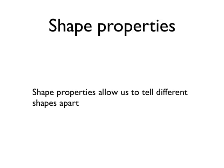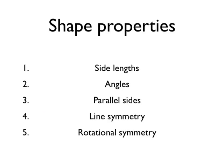In the previous two examples we've been able to tell shapes apart and distinguish between shapes using their properties. It's the properties of the shapes that allow us to tell different shapes apart. There are five main properties that we can describe about a shape.